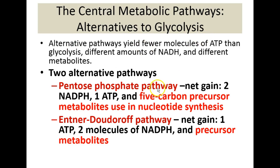Aside from glycolysis, some cells may exhibit additional central pathways. The pentose phosphate pathway is seen in many cells; it is not as efficient as glycolysis, making one ATP and two NADPHs, but it produces many five-carbon precursor metabolites used to make the sugars found in DNA and RNA nucleotides. The Entner-Doudoroff pathway is exclusive to some prokaryotes, yielding one ATP, two NADPHs per glucose, and precursor metabolites for unique sugars.